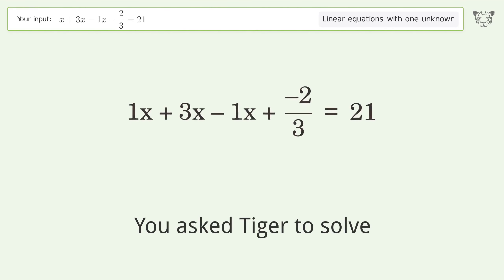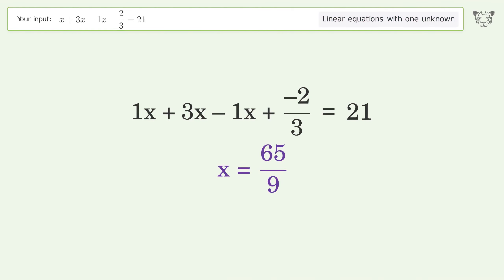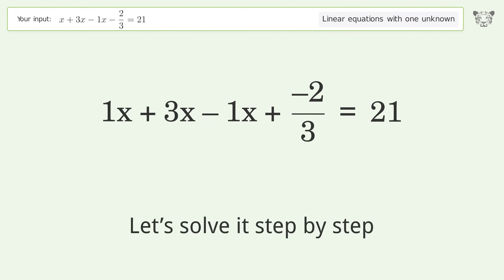You ask Tiger to solve this. This deals with linear equations with one unknown. The final result is x equals 65 over 9. Let's solve it step by step. Simplify the expression, combine like terms.